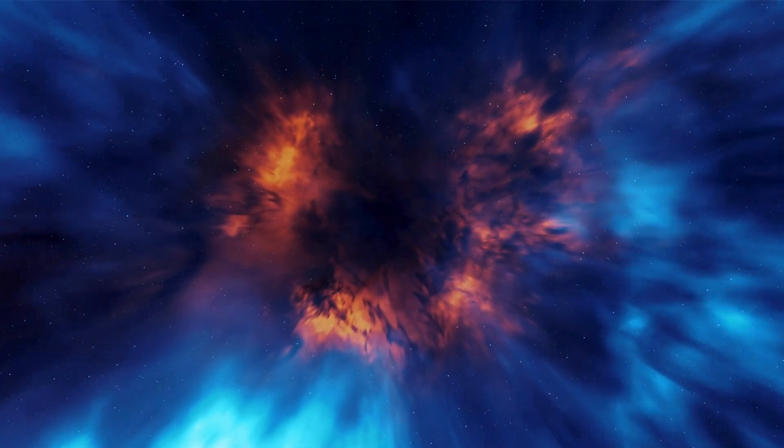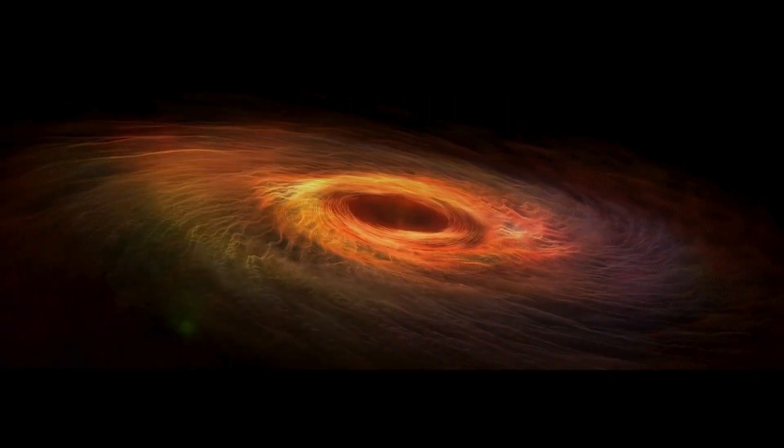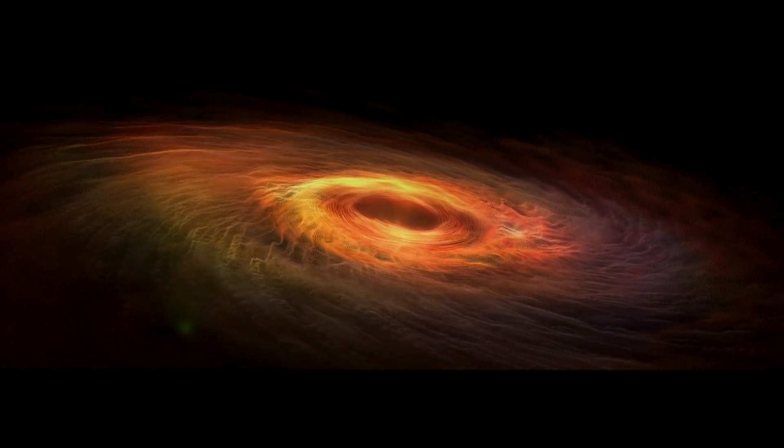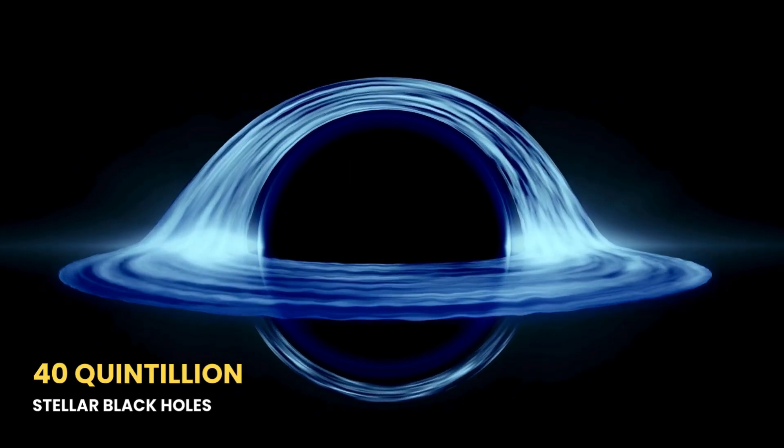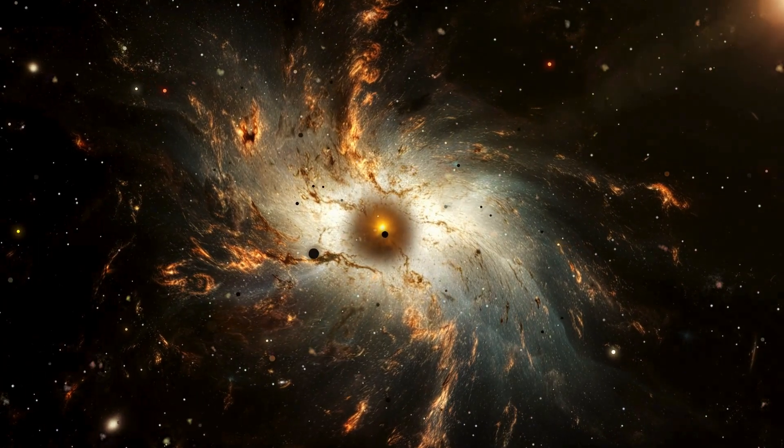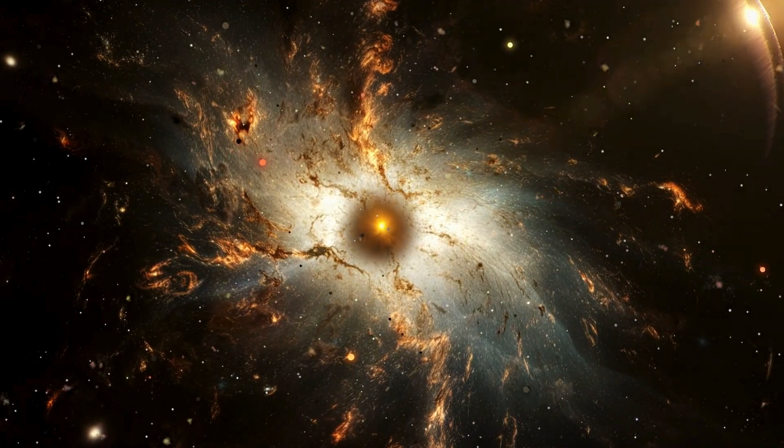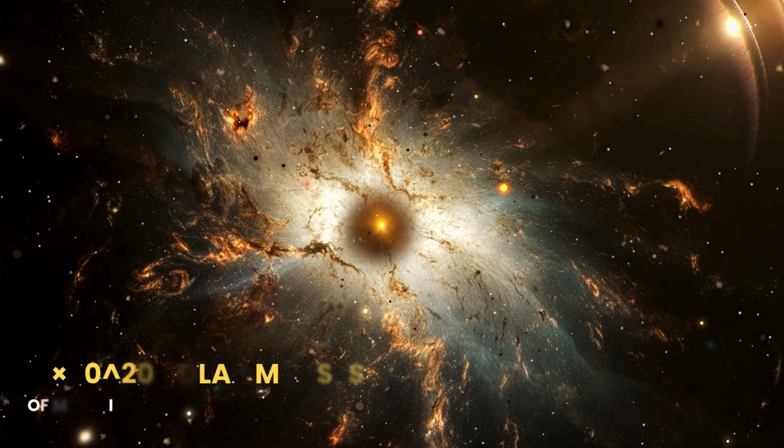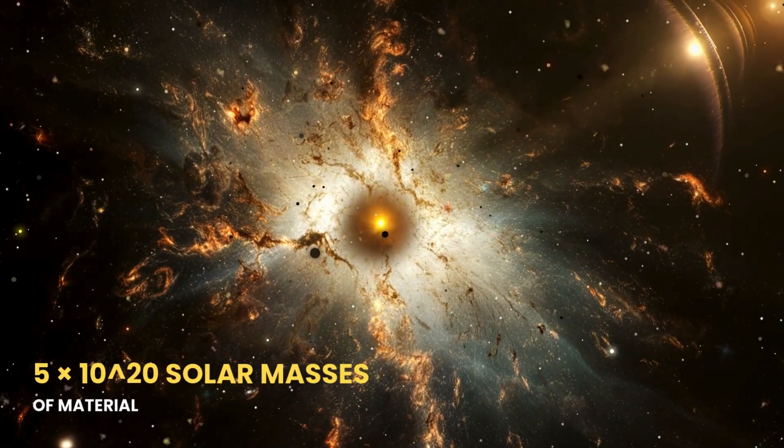And the moment it formed, the universe would never be the same. Let's start with scale. Astronomers estimate there are around 40 quintillion stellar black holes in the observable universe. That's a four with nineteen zeros after it. Add in the supermassive black holes lurking at the hearts of galaxies, and together they contain around five times 10 to the 20 solar masses of material.